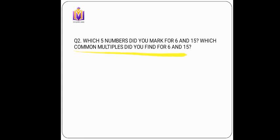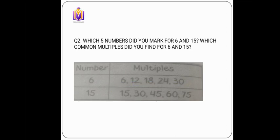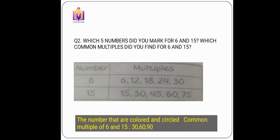For the number 6, the multiples are 6, 12, 18, 24, and 30 — basically the table of 6. For the number 15: 15, 30, 45, 60, and 75. In short, multiples just mean the multiplication table. For example, multiples of 2 are 2, 4, 6, 8, 10. Similarly, multiples of 6 are 6, 12, 18, 24, and so on. The common multiples of 6 and 15 are 30, 60, and 90 — the numbers that repeat in both tables.